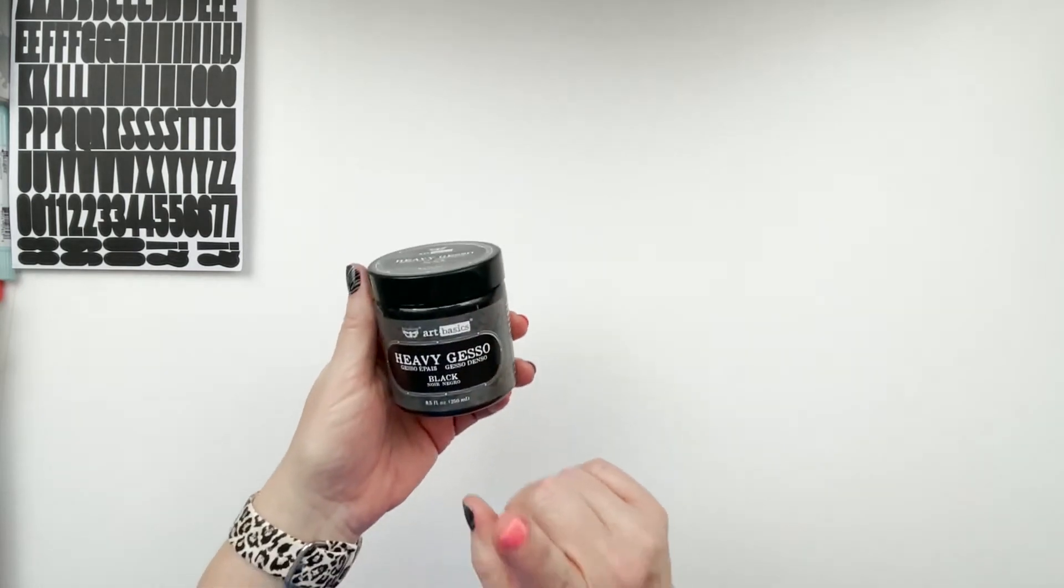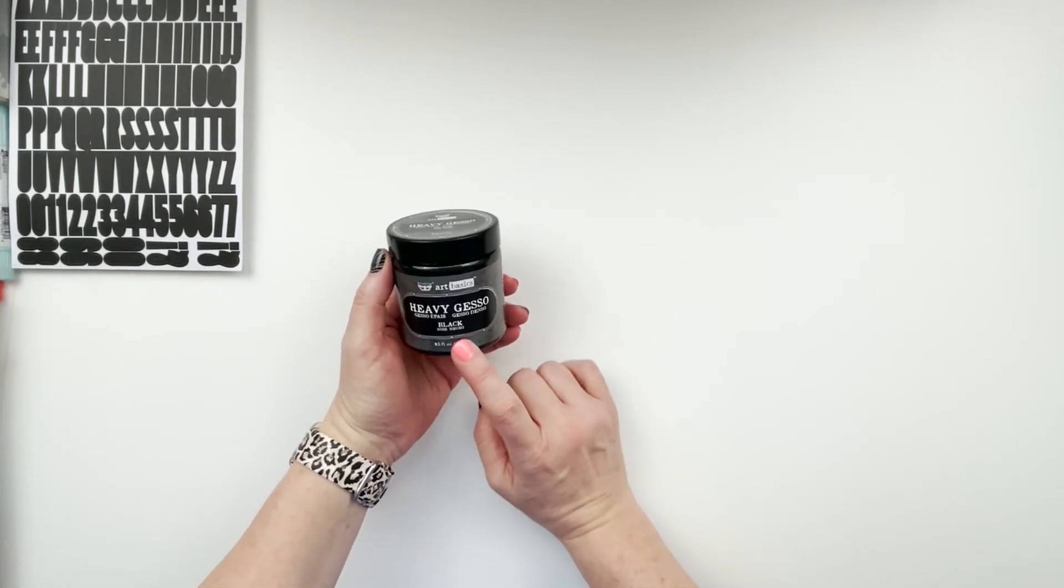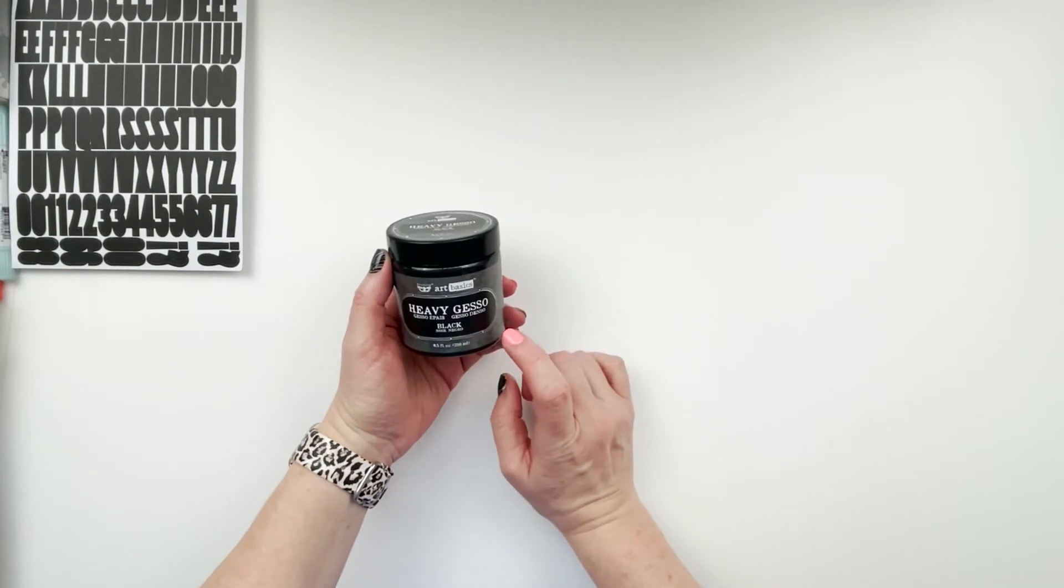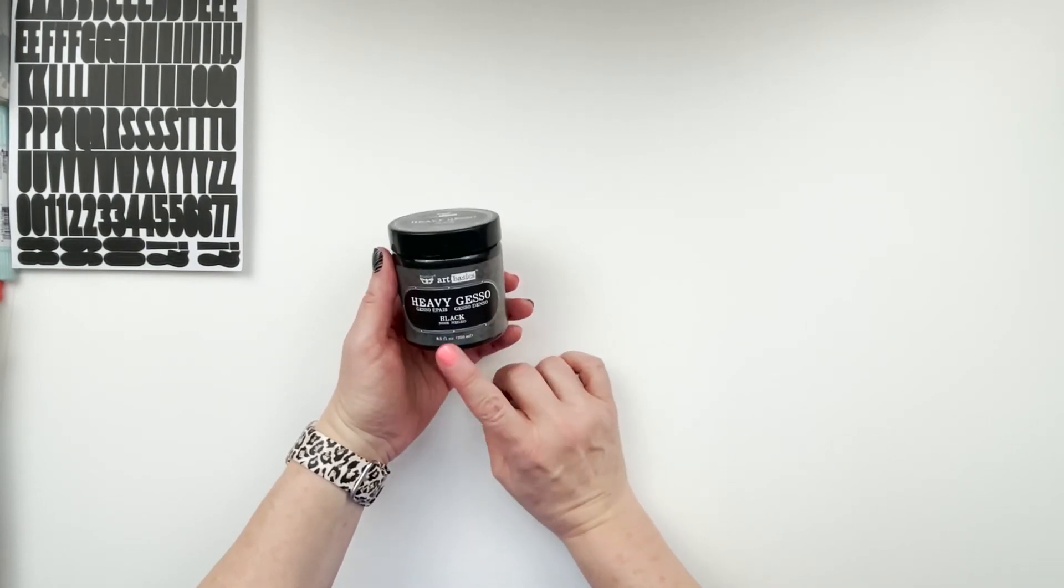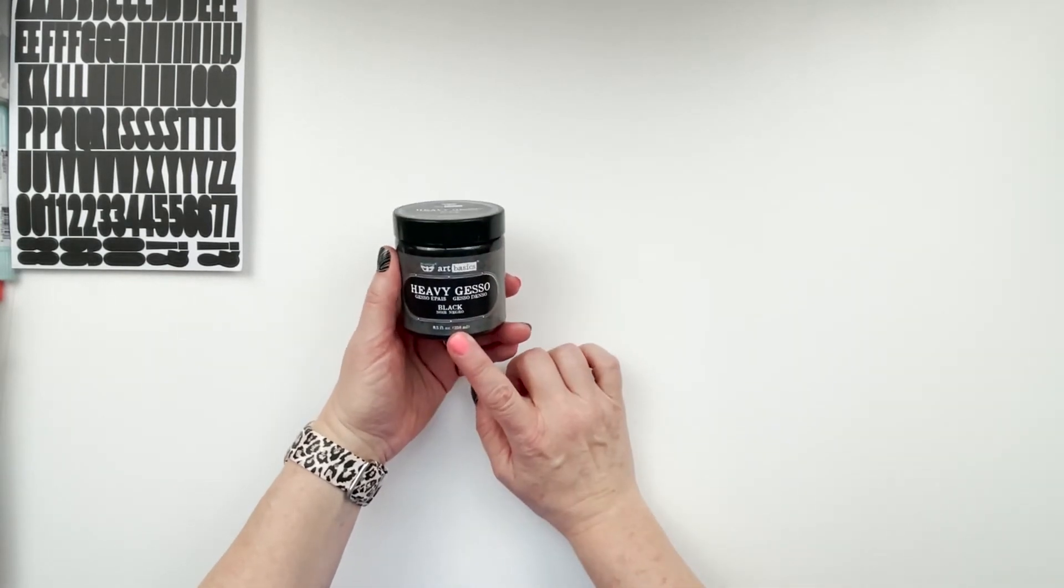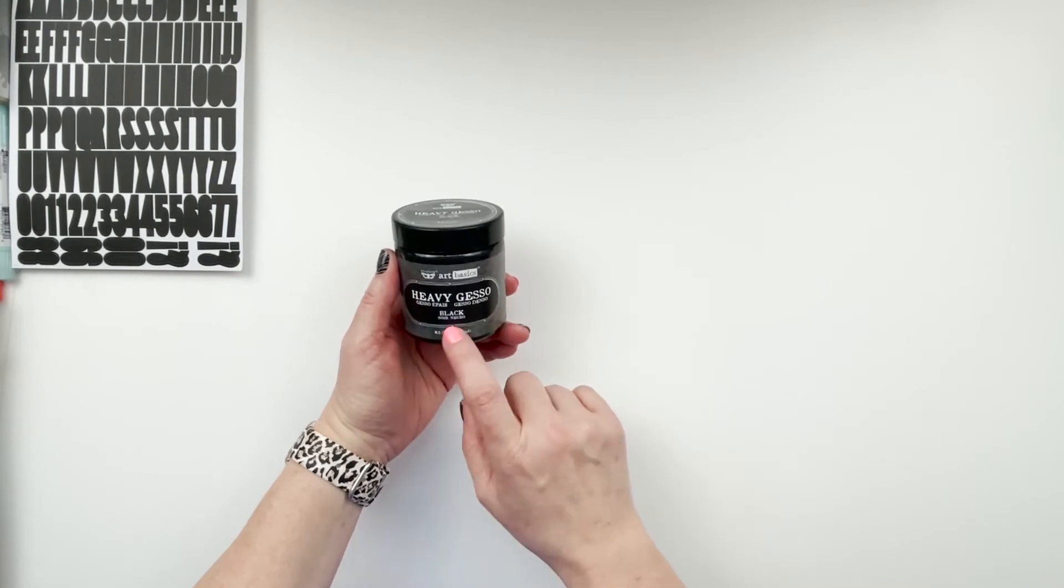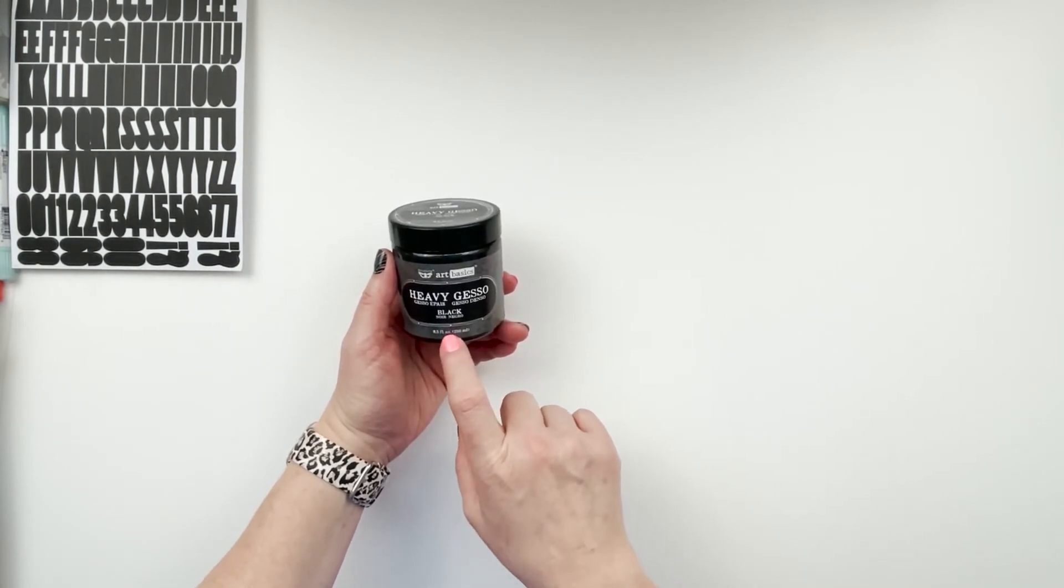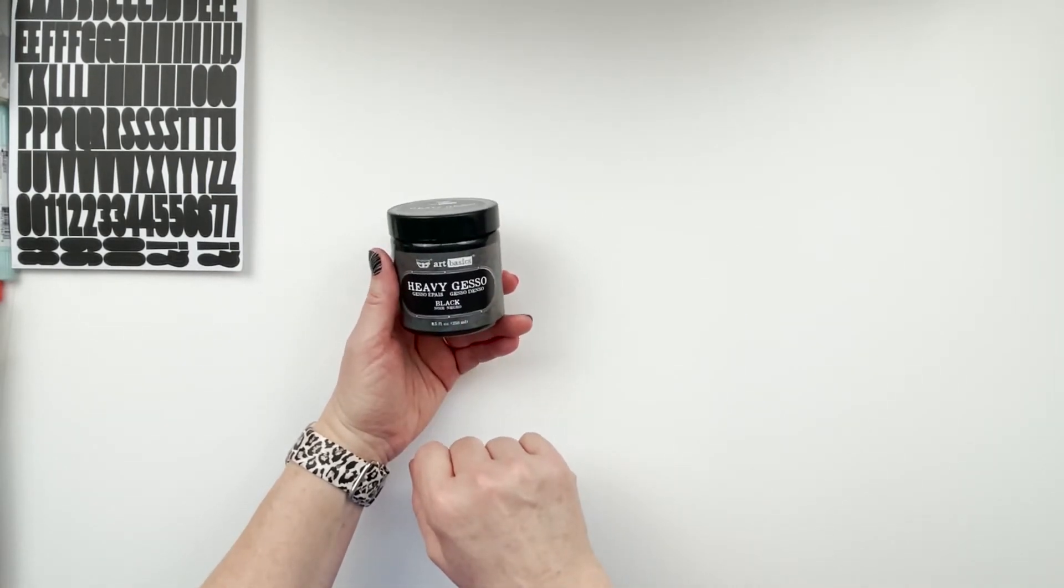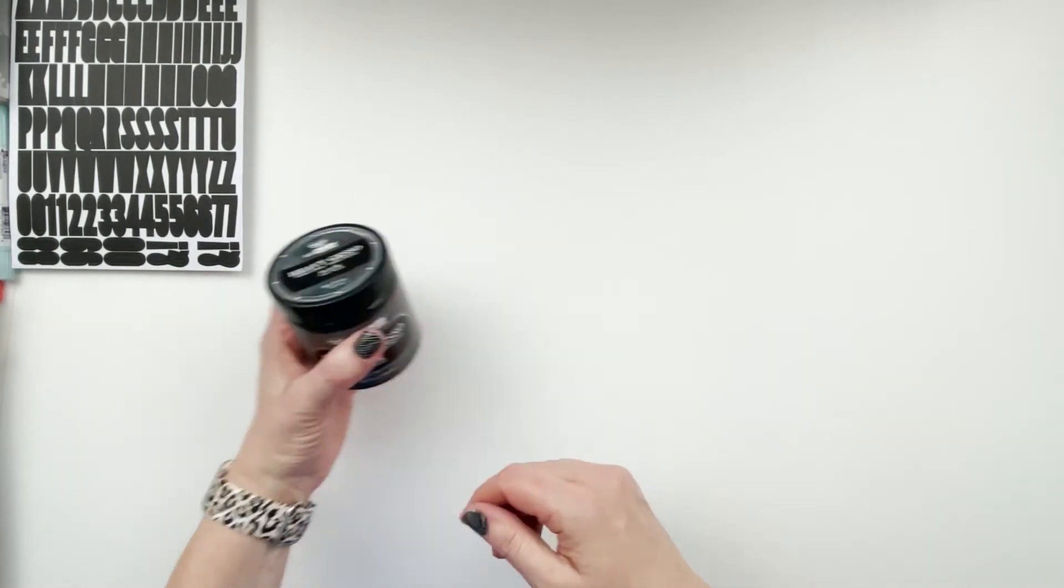And then I saw Heather's Crafty Life, she did an art journal page where she used black gesso. I have a few different types of gesso, but I didn't have black. And I know this Finnabair Art Basics, especially Missy Whidden talks a lot about it as well as a few other people. And so I thought I would try both the brand and the color since I was kind of branching out a bit.